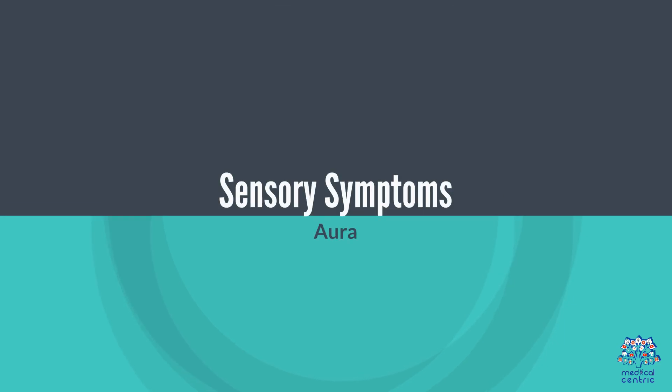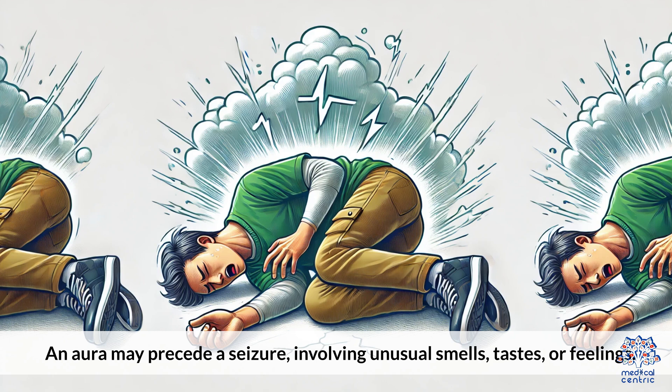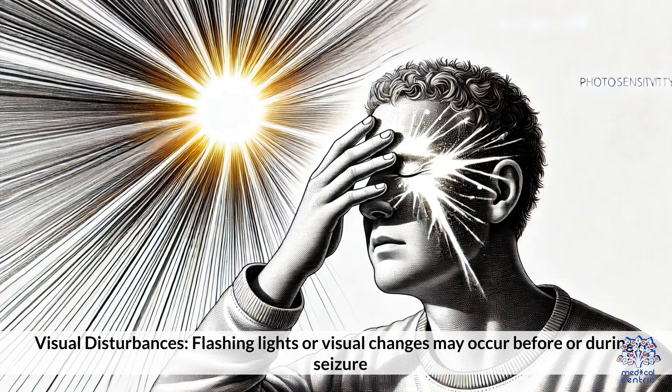Sensory symptoms: An aura may precede a seizure, involving unusual smells, tastes, or feelings. Visual disturbances such as flashing lights or visual changes may also occur before or during a seizure.